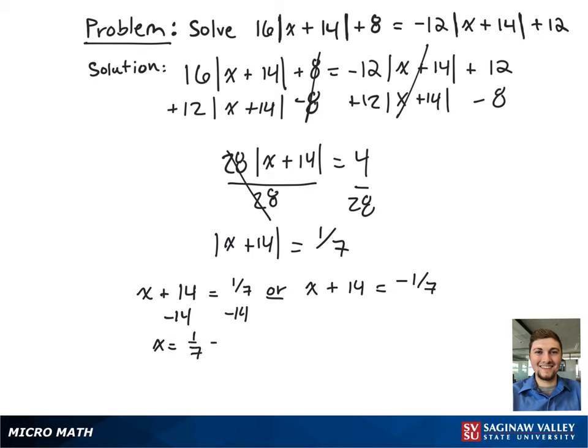So starting on the left hand side, after subtracting both sides by 14, we get x equals 1 seventh minus 98 sevenths. This reduces to x equals negative 97 over 7.